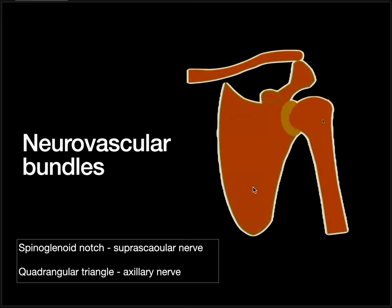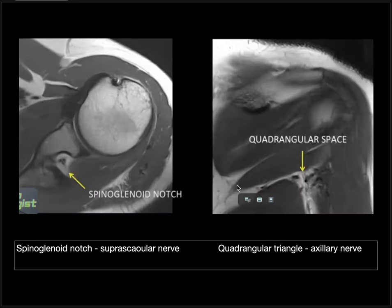Last is the neurovascular bundles. On axial sections, we will see the suprascapular notch, and this suprascapular notch will contain the suprascapular nerve. On coronal sections, you will see a quadrangular space, and this quadrangular space will contain the axillary nerve.